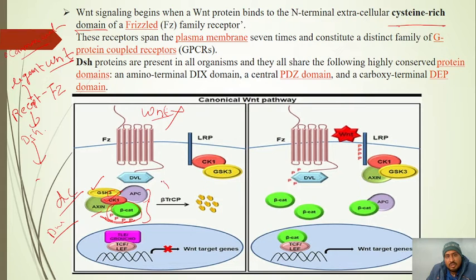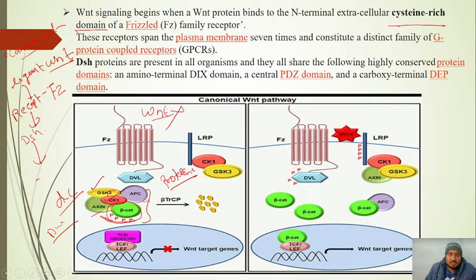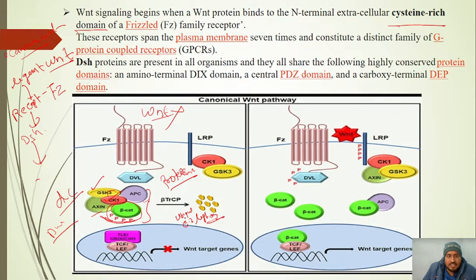What is proteasomal degradation? Through the process of ubiquitination — mediated by Ubiquitin E3 Ligase — beta-catenin undergoes proteasomal degradation. As a result, WNT target genes are not expressed.